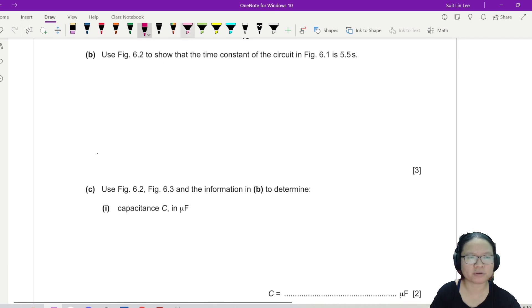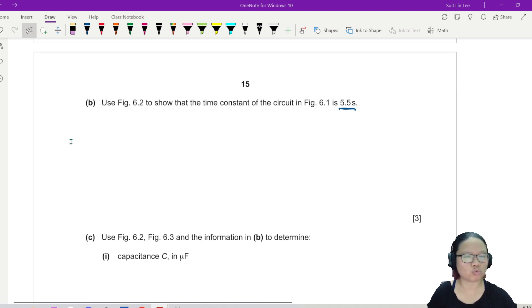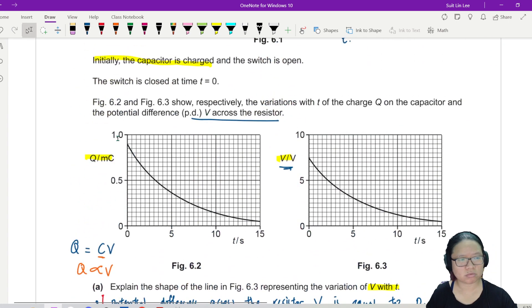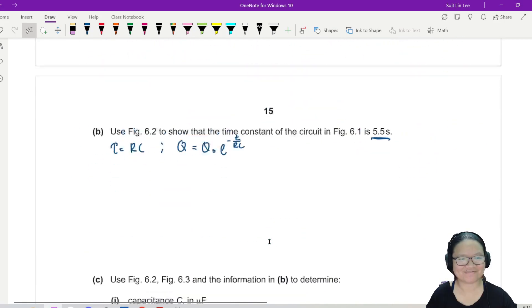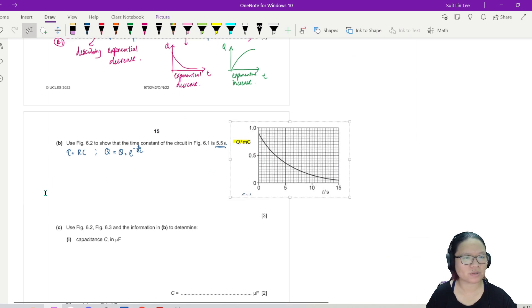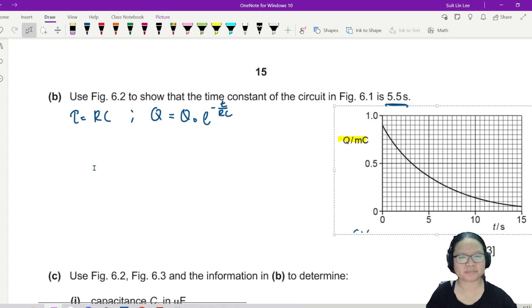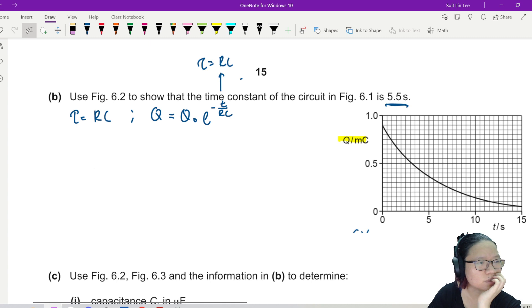Use the graph to show that the time constant is 5.5 seconds. Okay. So to find out what the time constant is, I need to know what to do. I know that time constant is equal to RC, but I don't know R and I don't know C. However, I know the exponential equation. Maybe I'll use Q. Q is equal to Q_0 e^(-t/RC). Teacher, why do you use Q? Because the question gave me Q. So I need to show that the time constant is 5.5 seconds. How? Well, I know the time constant is equal to RC. So I'm going to substitute RC into t.